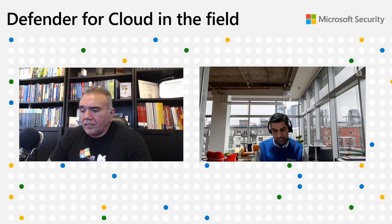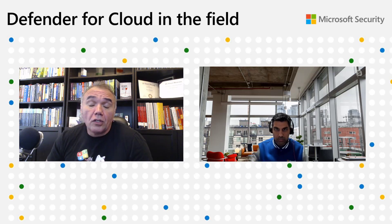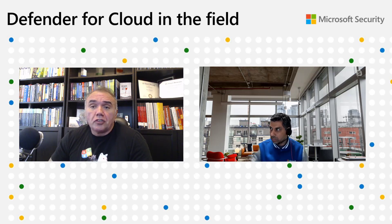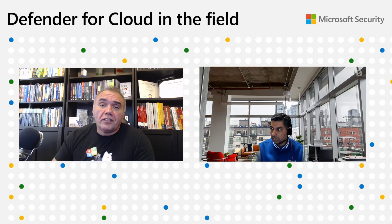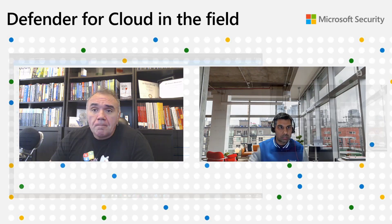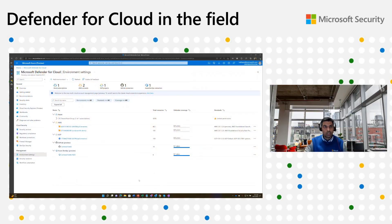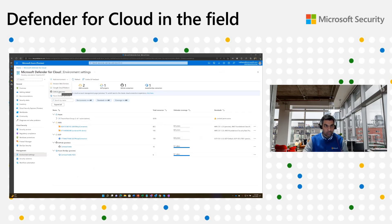Outstanding — this is actually great. Let's take a look at how this whole thing works in your demonstration. So within Microsoft Defender for Cloud, within environment settings, you can enable connectors for GitHub and Azure DevOps. For this demo, I'll click the GitHub one.